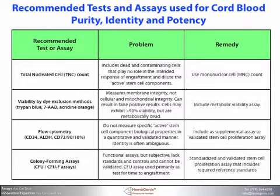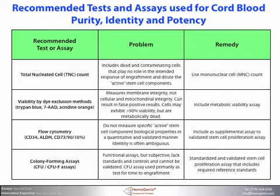Flow cytometry markers do not measure specific active stem cell component biological properties in a quantitative and validated manner. In addition, the identity is often ambiguous. However, flow cytometry can be included as a supplemental assay to validated stem cell proliferation assays.